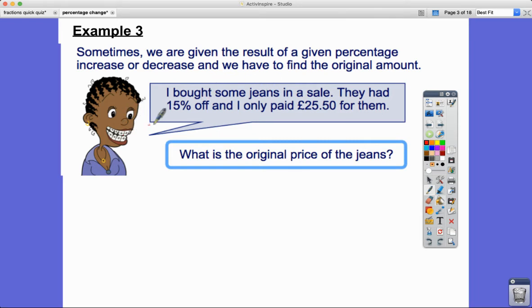So this person has bought some jeans in a sale. So let's just label what's happening. There's a sale. There's the original. And they had 15% off. So let's put that 100% in. Let's take off 15%. So that's 85%.